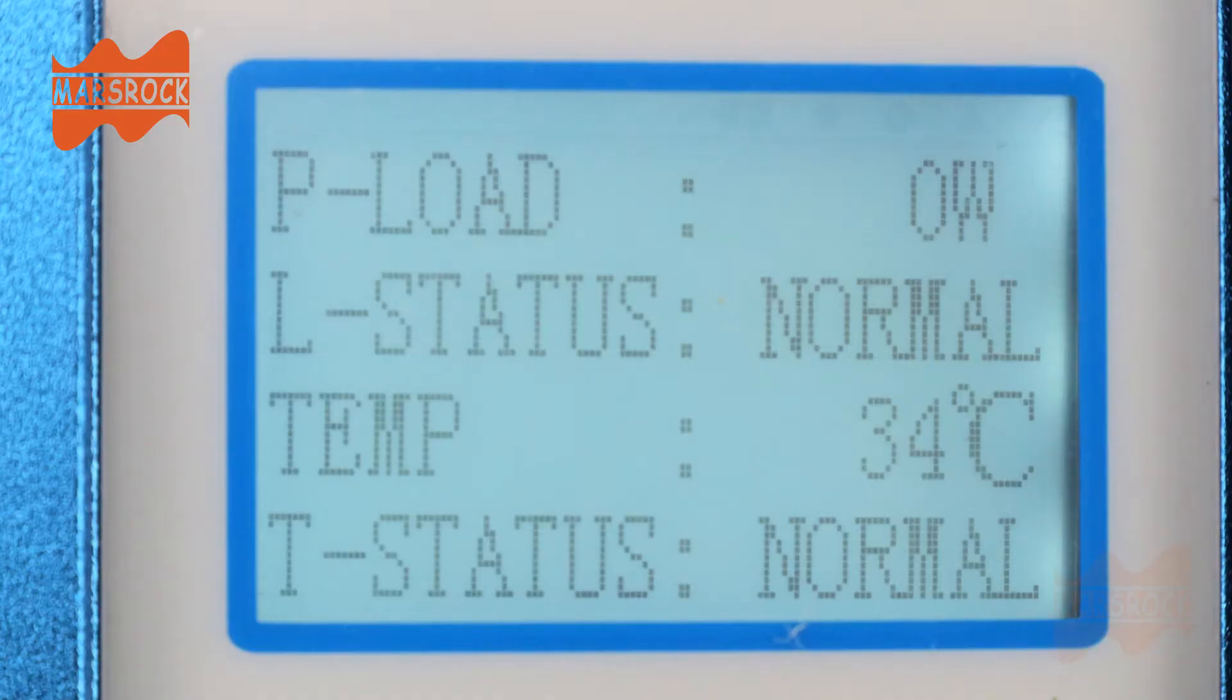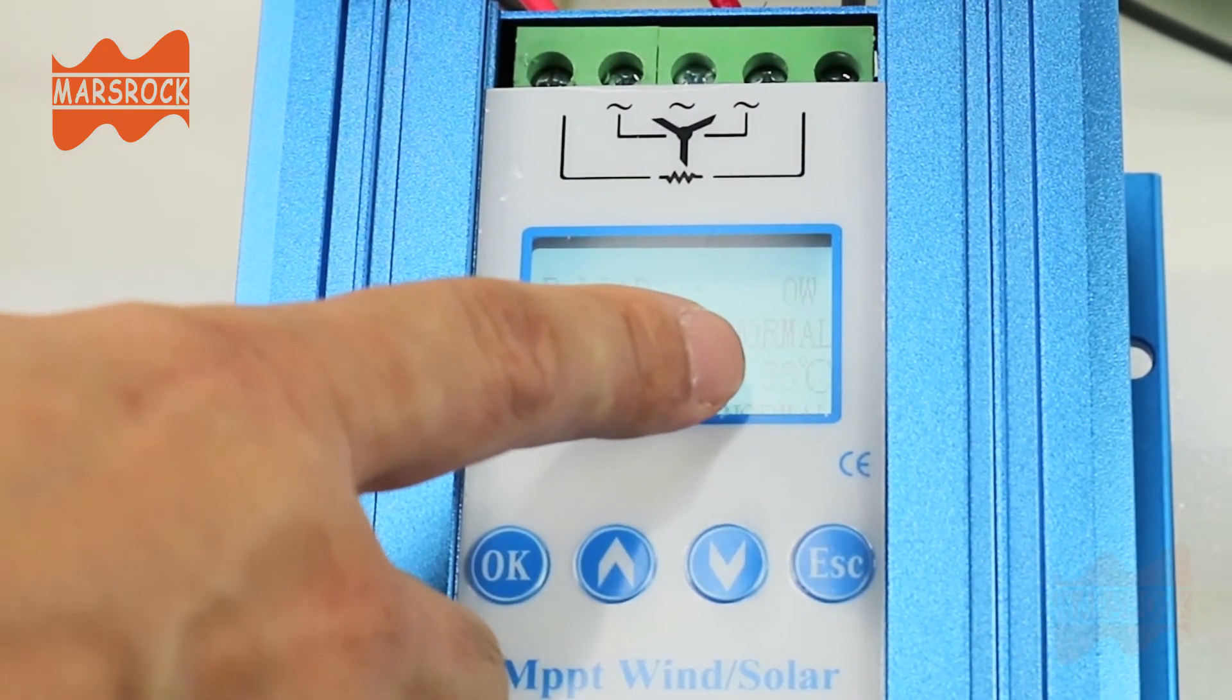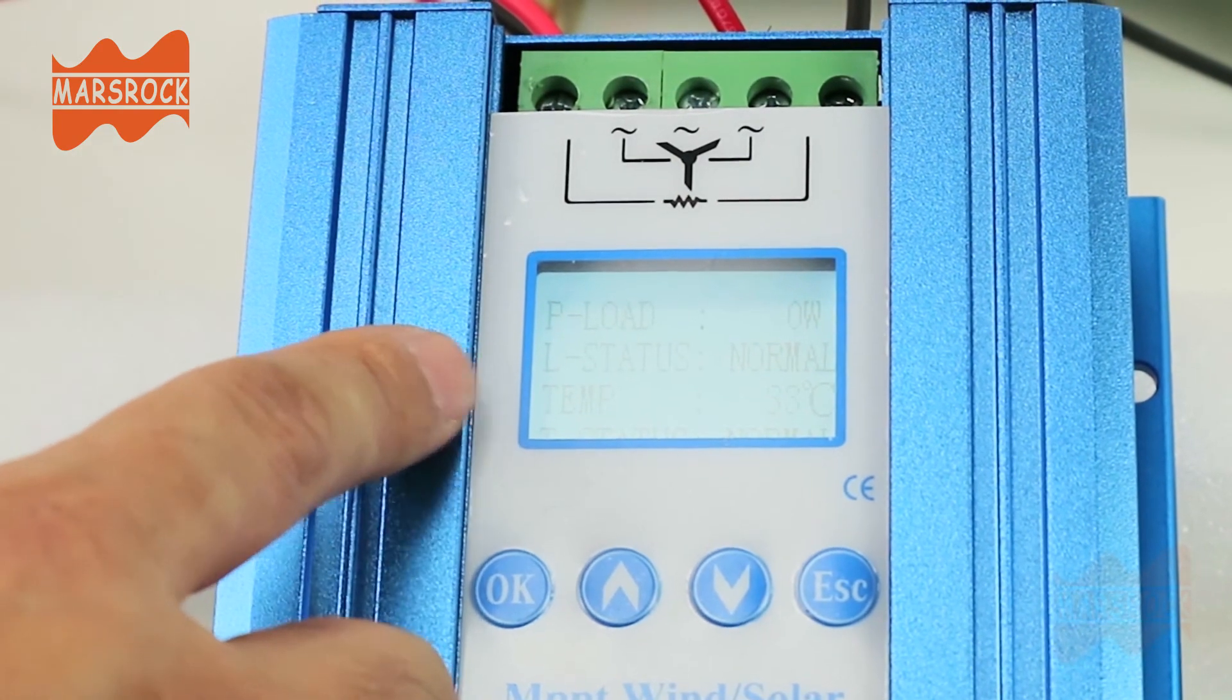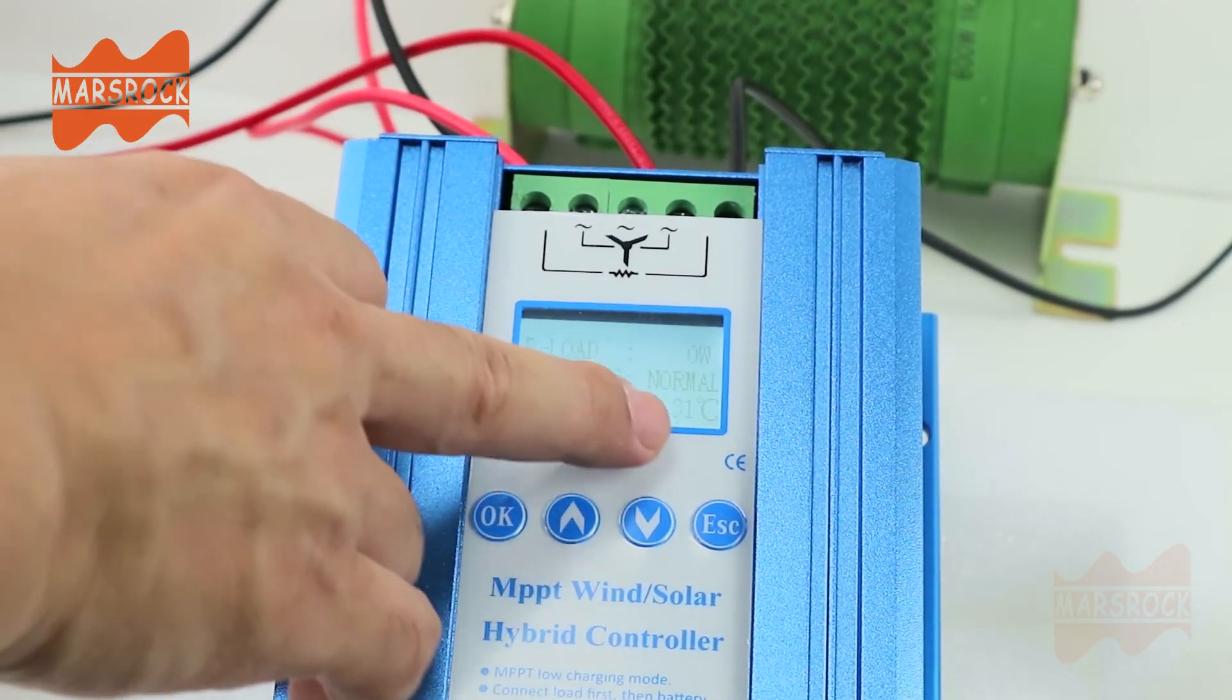It shows you the control unit temperature. Now it's 33. It's in good working situation, so it's showing normal.